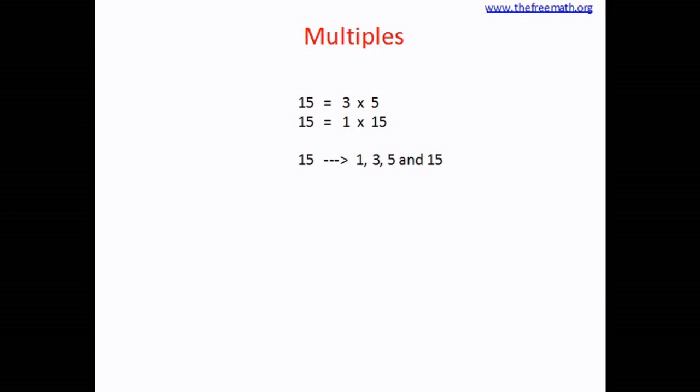In other words, you can say that 15 comes in the table of 1 and 15 comes in the table of 3 and in the table of 5 and in the table of 15. That is why we call 15 a multiple of 1, 3, 5, and 15.